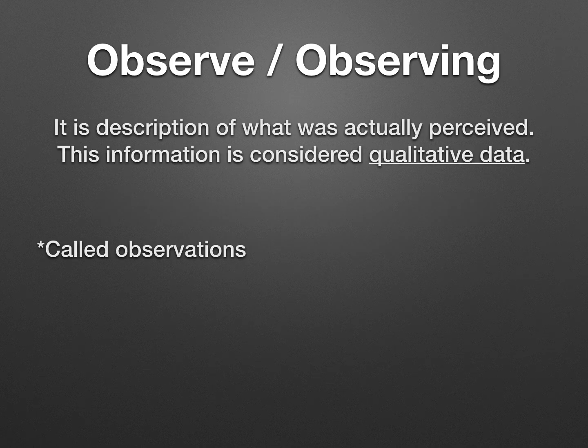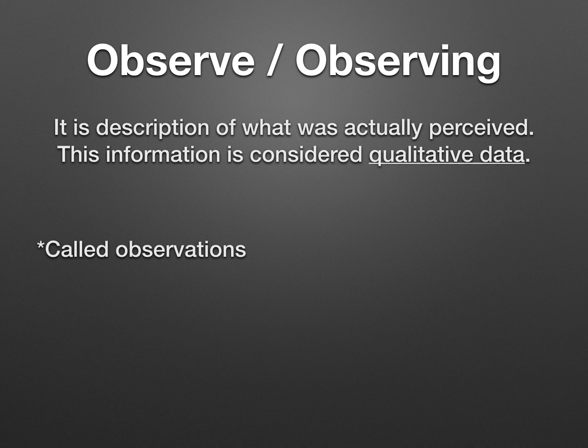Observing is a description of what was actually perceived by you. This information is what we call qualitative data. Qualitative data means using traits, using your five senses. So when you observe things, you use your five senses — sometimes you're able to use all five, sometimes you're only able to use one or two. If you don't know your five senses, please ask me when you get back to class. We call these observations.